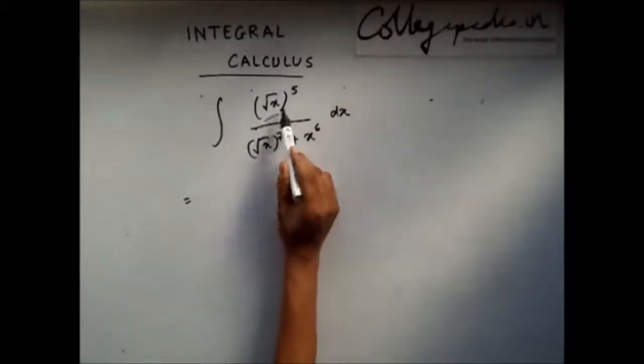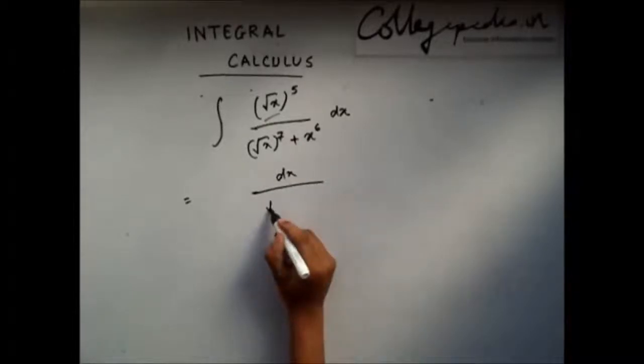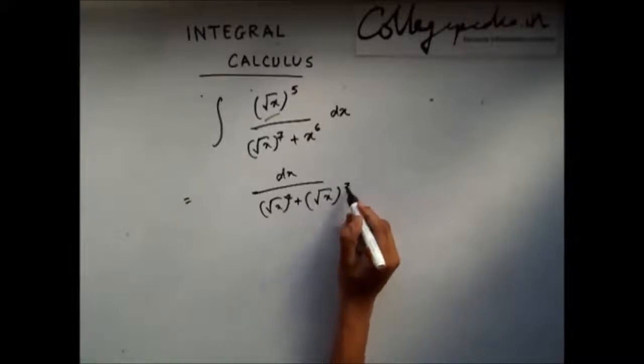What I will do is divide numerator and denominator with root x to the power 5. So if I divide that I will get here plus 7.